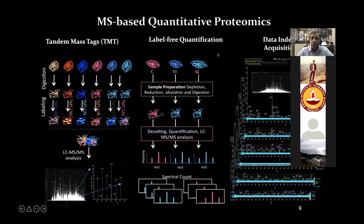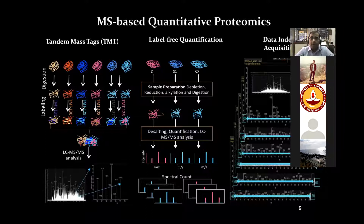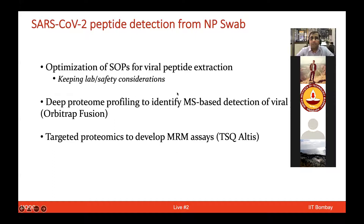DIA, or data-independent acquisition, is a different approach. Both TMT and iTRAQ are DDA-based methods, while data-independent acquisition acquires spectra at much higher resolution with small windows of m/z and uses spectral library comparison. The major challenge was: can we do good protein extraction? Viral safety was a major concern at the time. We did not have prior experience handling the SOP sample or doing virus inactivation. Working with these SOPs was critical, and we relied on some WHO guidelines and recommendations from other labs to optimize these protocols.